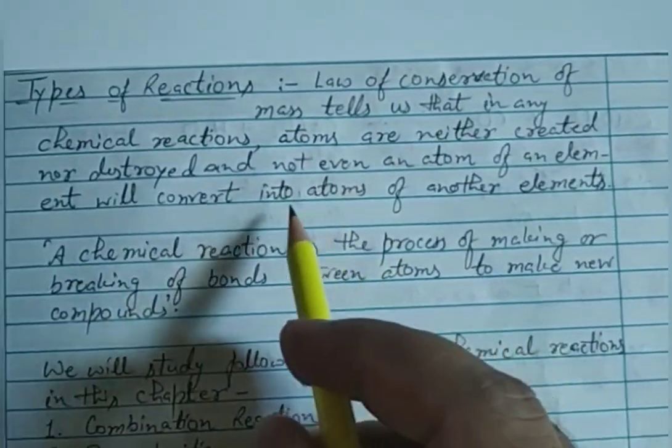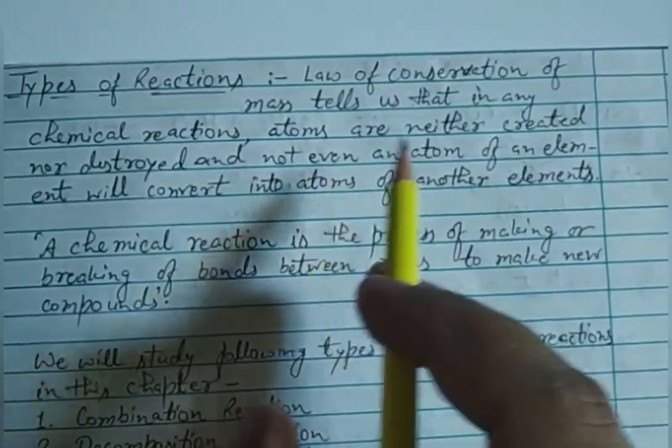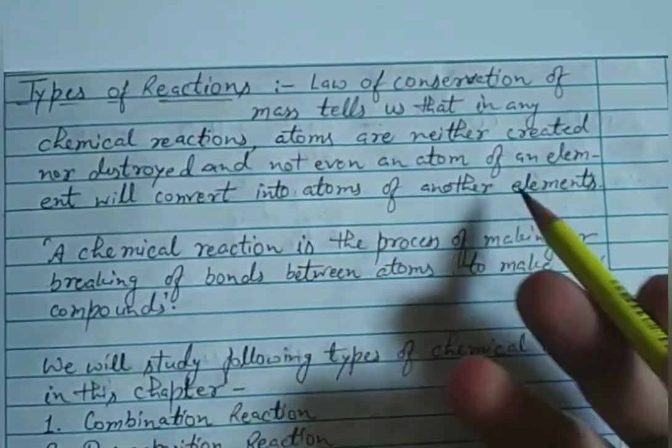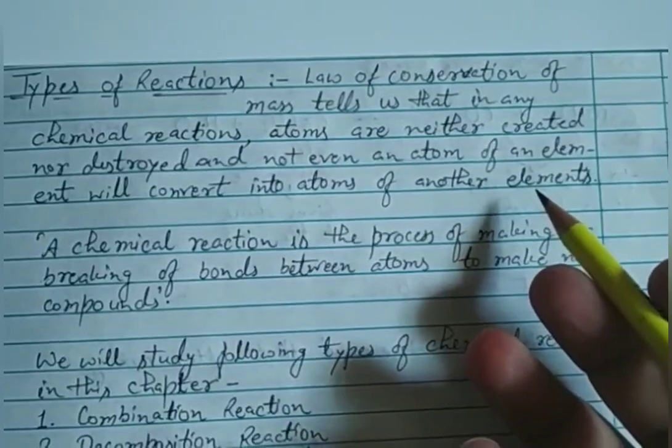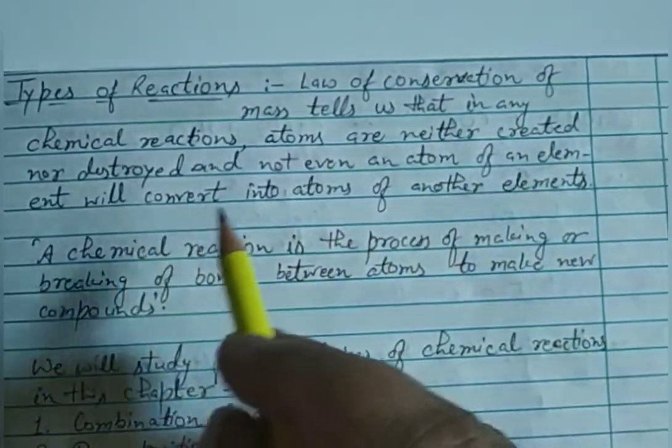Mass means the atoms - the atoms can neither be created nor destroyed before or after a chemical reaction. This means they remain the same, and one type of element will not convert into atoms of another element.